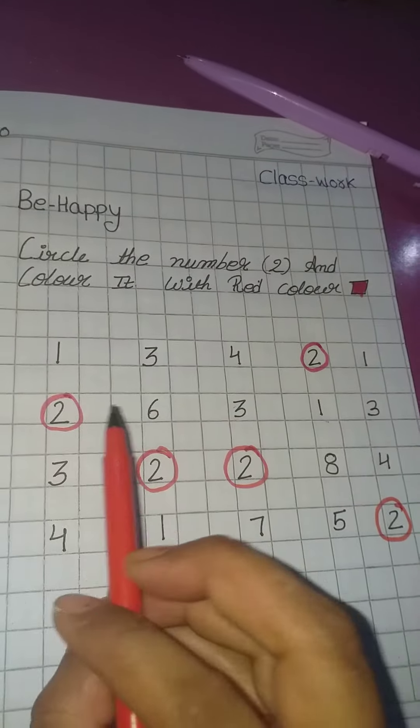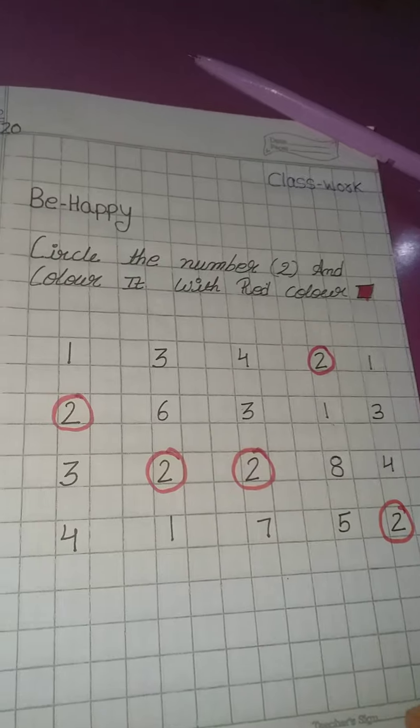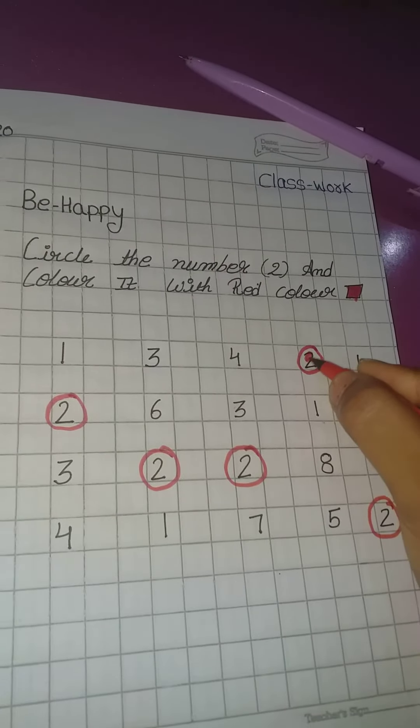Total kitne 2 hai? 1, 2, 3, 4, 5. Total 5 hai. This 2 ko aapko ishtaray sa color bhi karna hai.